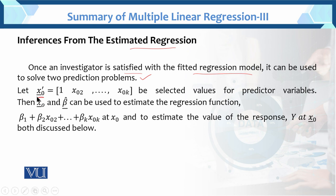Let x₀' be the vector of selected values of the predictor variables: 1, x₀₂, up to x₀ₖ — this is the general case of k predictors. Then x₀ and β̂ can be used to estimate the regression function. The model has β₁ as the constant, with values x₀₂ up to x₀ₖ as the response — the dependent variable.